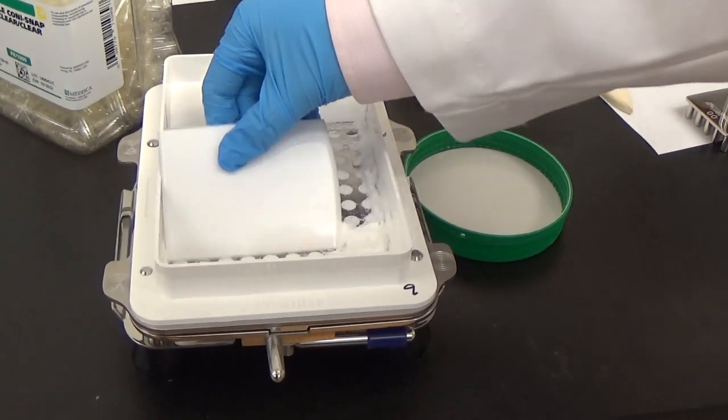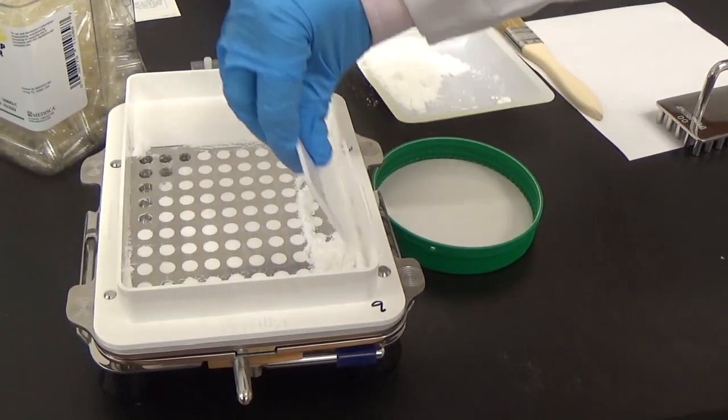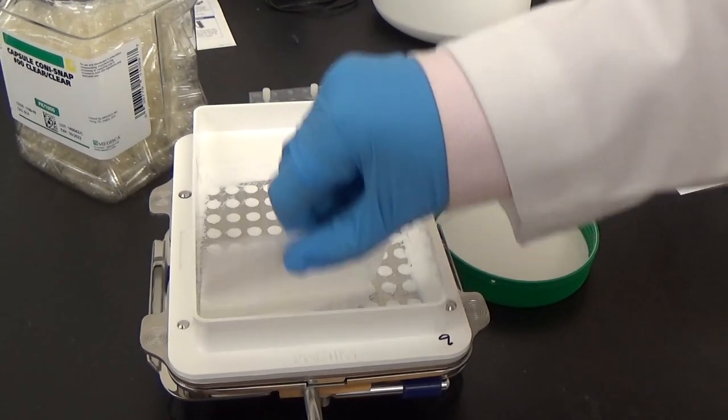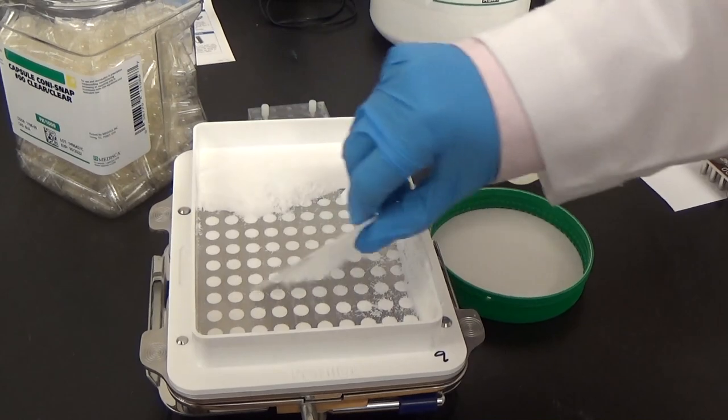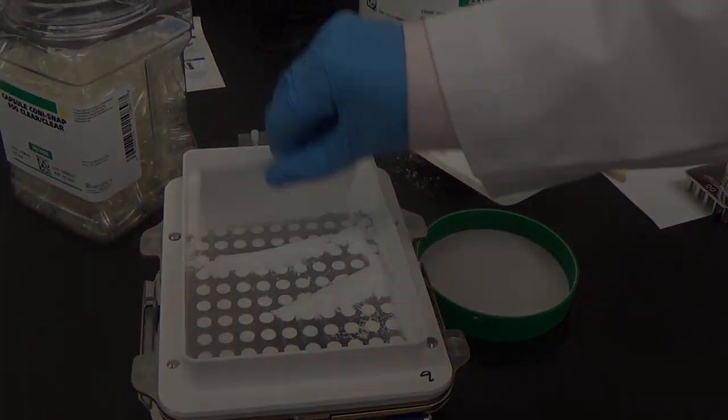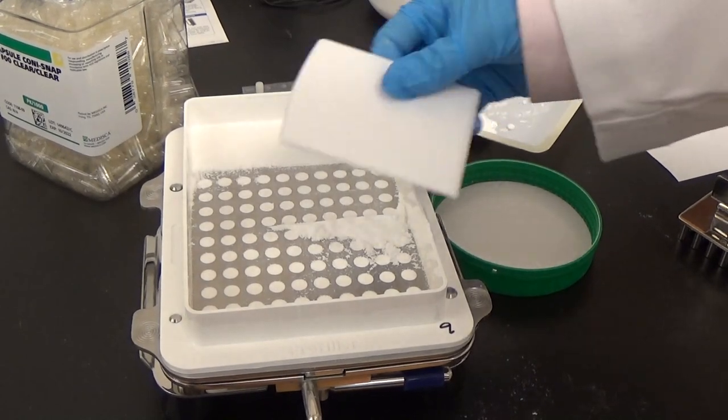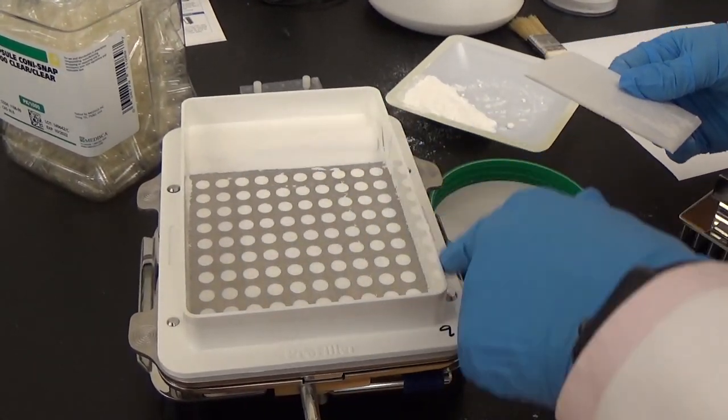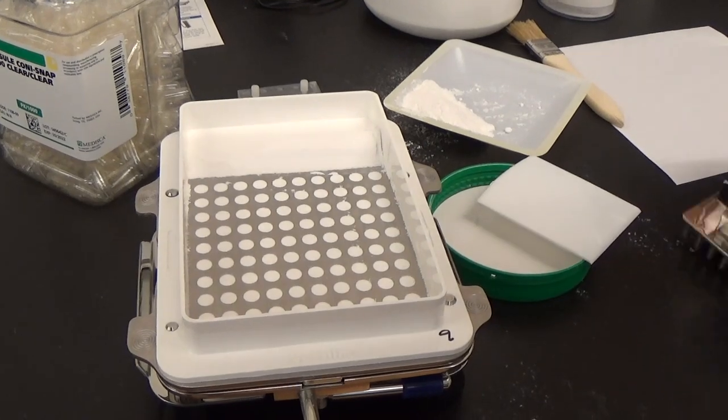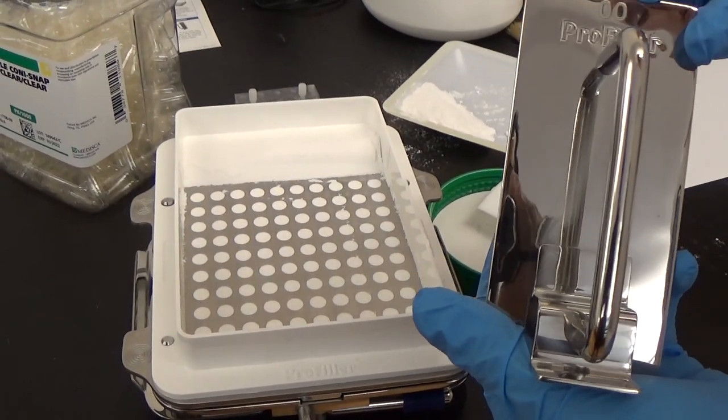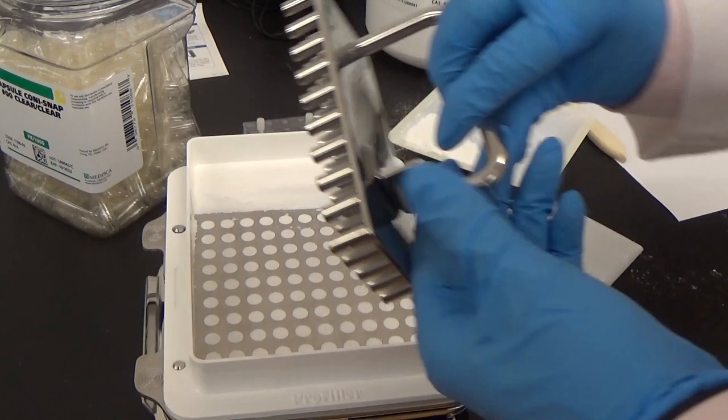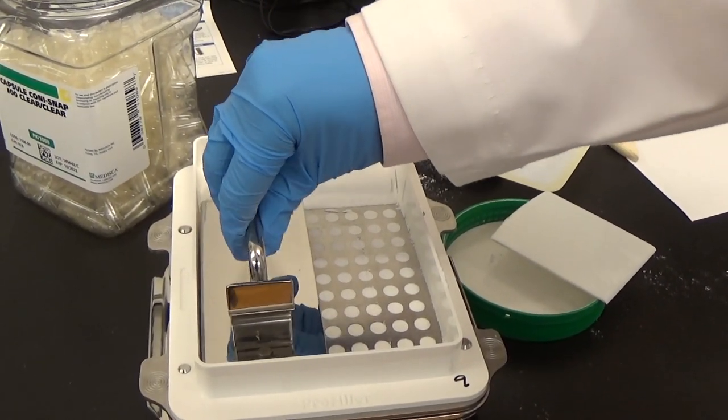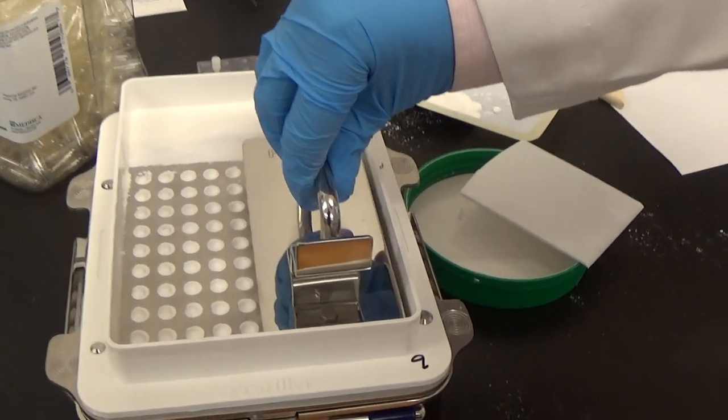This is the spreader that we are going to be using. Once we have the excess powder, we want to remove that to the side. To make sure that each body has enough powder, you want to use this tampering device which is labeled double zero, and we want to lightly press on each part of the capsule filling machine to make sure that they're filled uniformly.